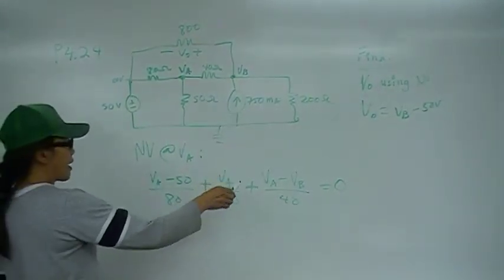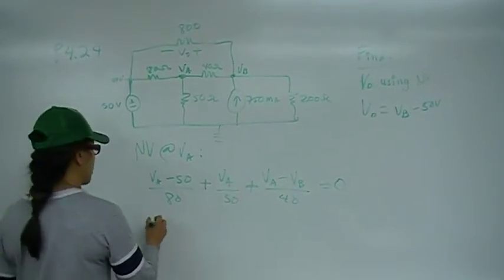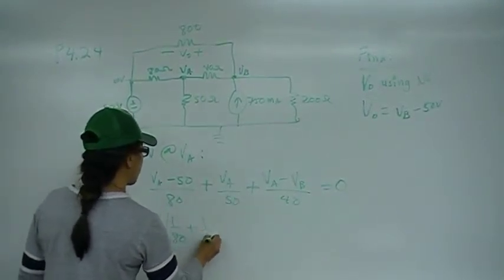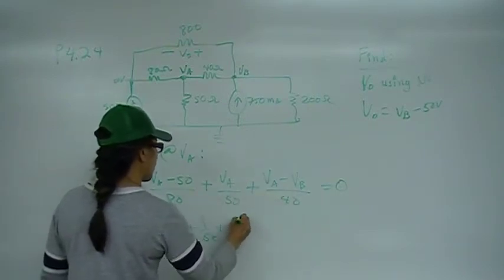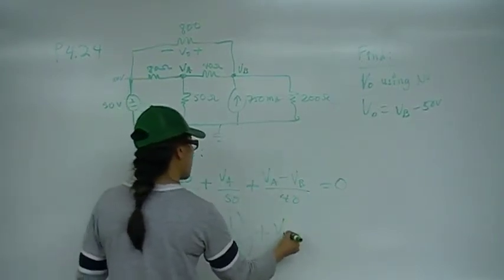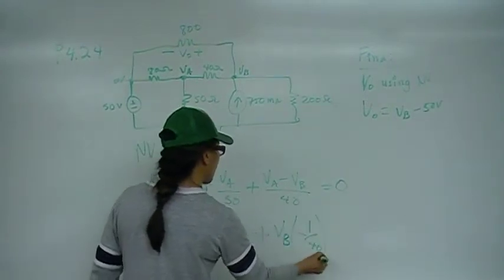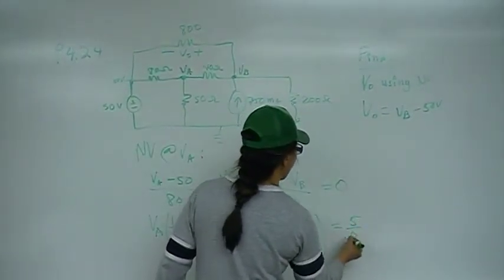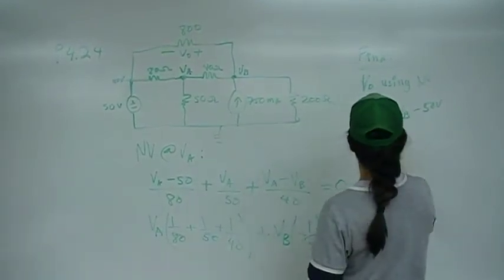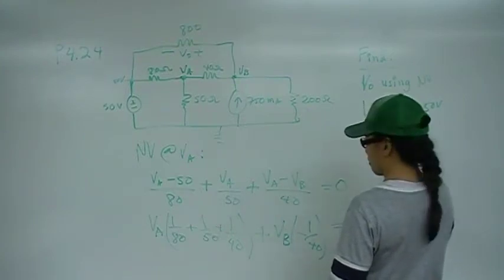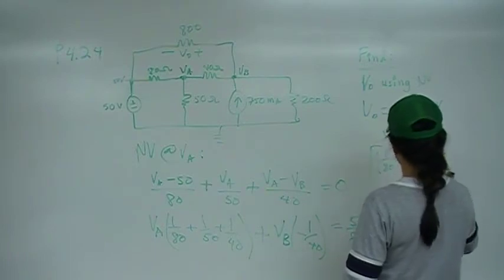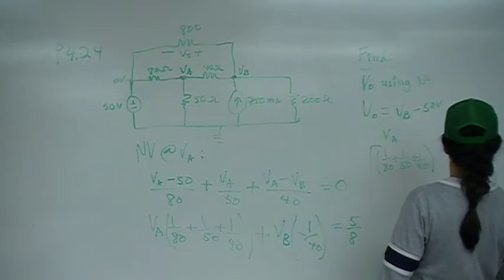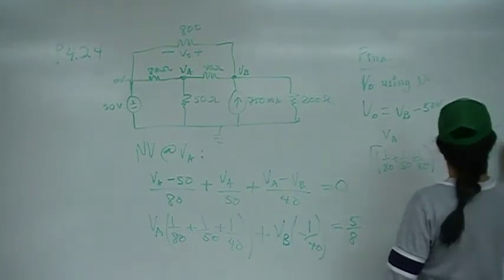I'm going to rewrite this in a way that will be useful for my matrix application. I'm going to group all the VAs together: here we have 1 over 80, plus 1 over 50, plus 1 over 40. And I'm going to group all my VBs together: here I have negative 1 over 40. The constant is negative 5 eighths, which we bring over to the other side as positive 5 eighths. So my matrix row for VA has (1/80 + 1/50 + 1/40) for VA, negative 1/40 for VB, equals 5/8.